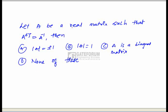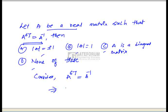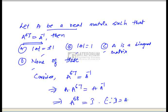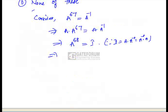In this problem, A is a real matrix such that A^67 = A⁻¹. We need to determine which of the four options is correct. Multiplying both sides by A: A · A^67 = A · A⁻¹, giving A^68 = I, since A · A⁻¹ = I. If A^68 = I, then |A^68| = |I| = 1, which implies |A|^68 = 1, so |A| = ±1. The answer is option A.